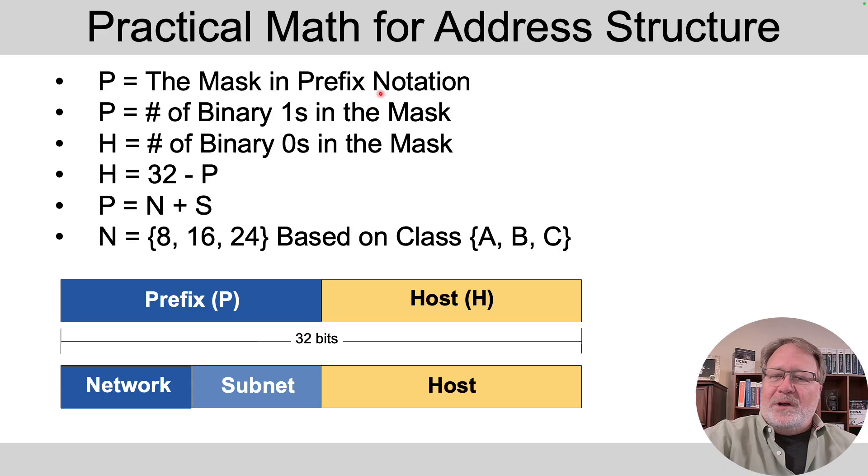We'll use the variable P to represent that number. So P is the number of binary ones in the mask. For instance, slash 24 means the mask has 24 binary ones in it. So the number of host bits, it's the number of binary zeros in the mask.